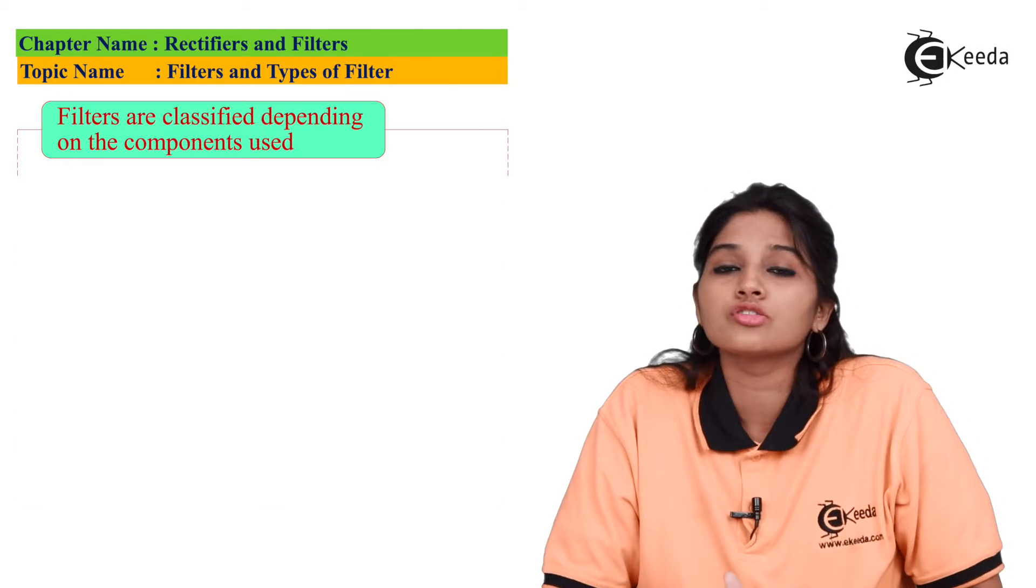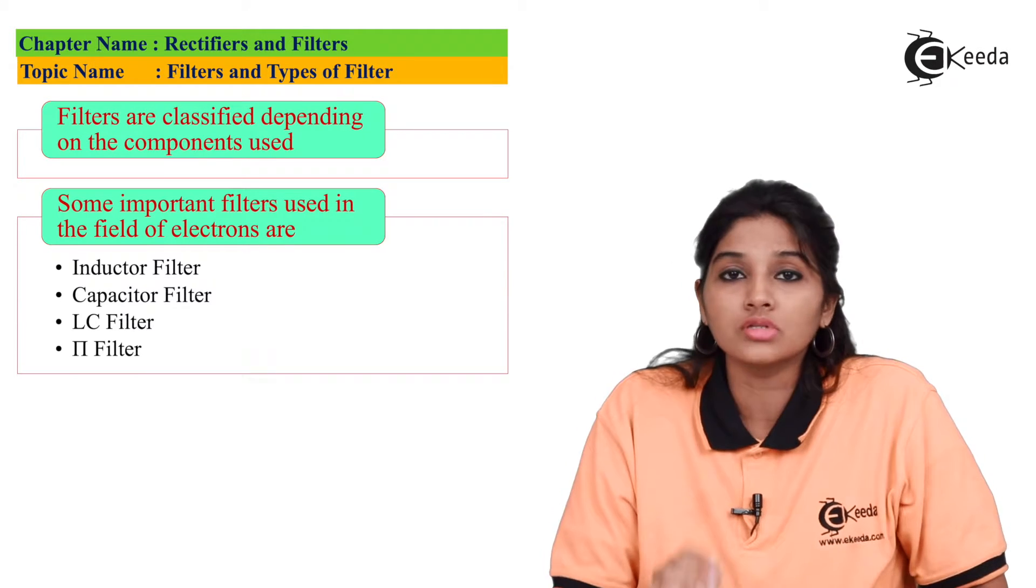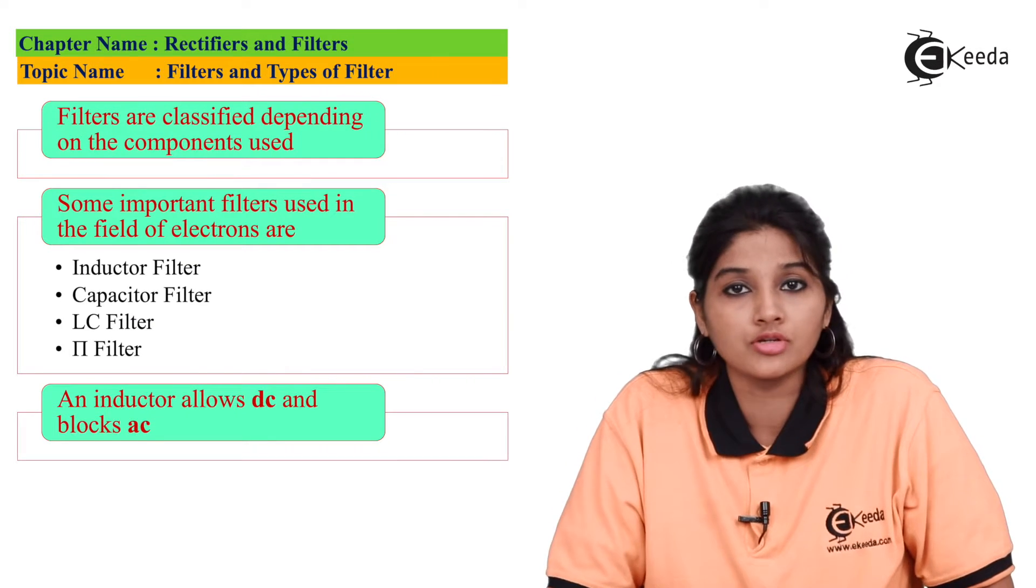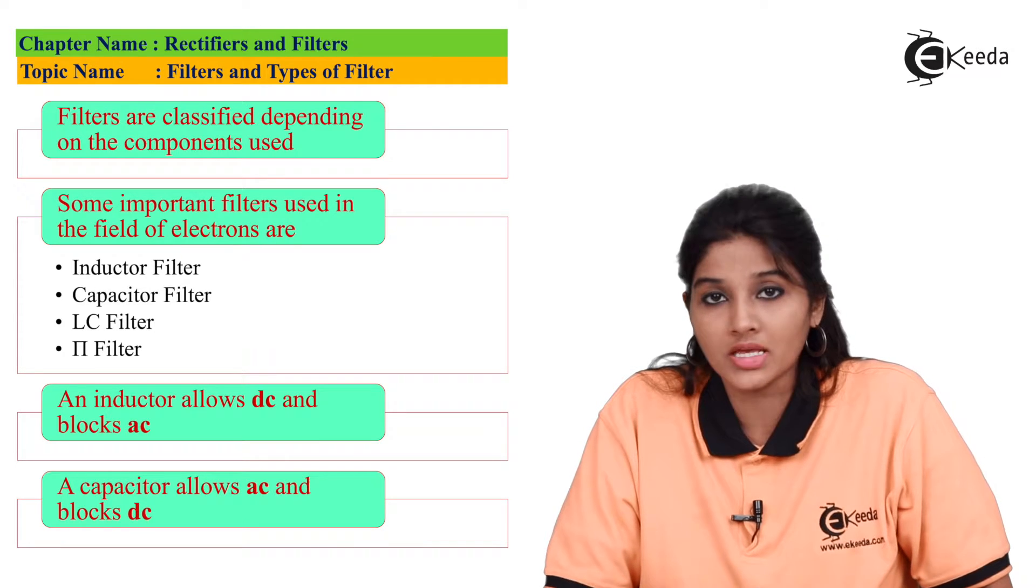Filter circuit mostly consists of inductor, capacitor and resistor. So these elements are basically passive elements. Therefore, the filters formed by using these elements are also called as passive filters.